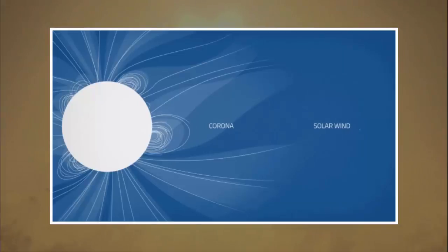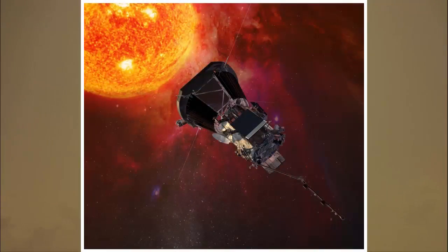The sun is the source of the solar wind, a flow of gases from the sun that streams past Earth at speeds of more than a million miles per hour. Disturbances in the solar wind shake Earth's magnetic field and pump energy into the radiation belts.